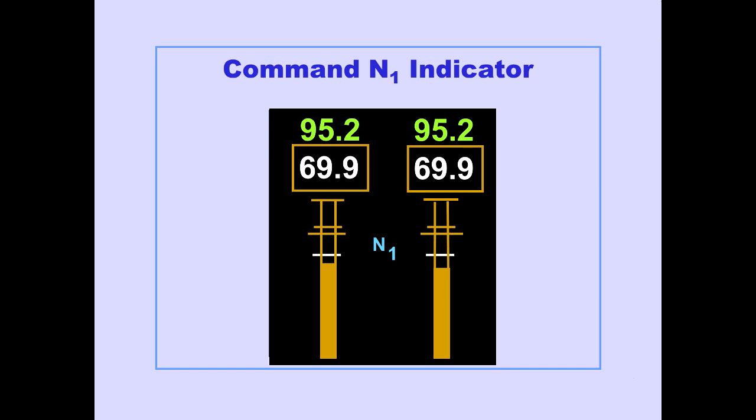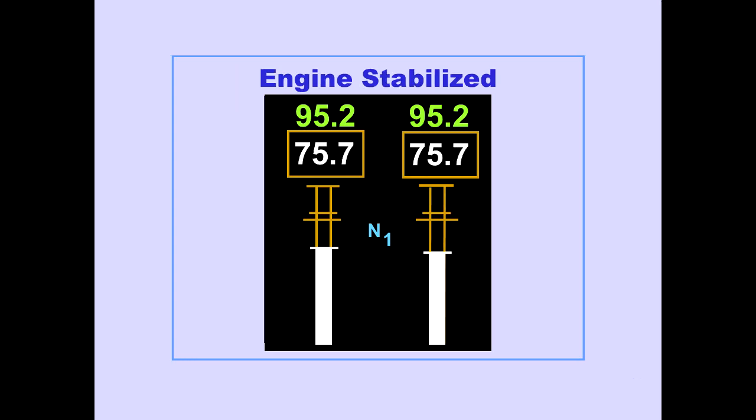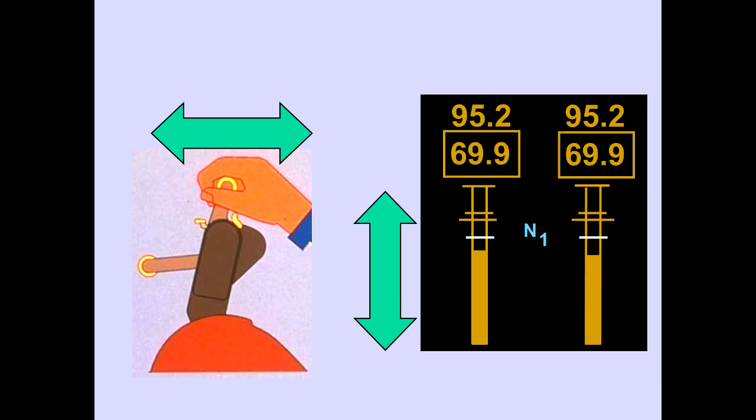The command N1 indicators display N1 RPM commanded by thrust lever position. When the engine is stabilized, actual N1 RPM equals the command N1 RPM. As the thrust levers are moved, the new command N1 RPM is displayed.